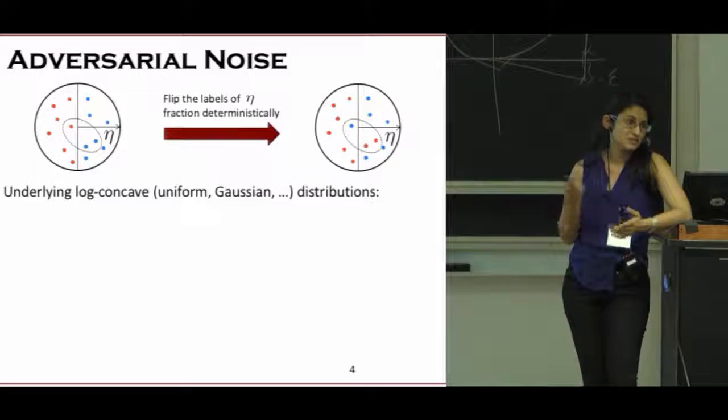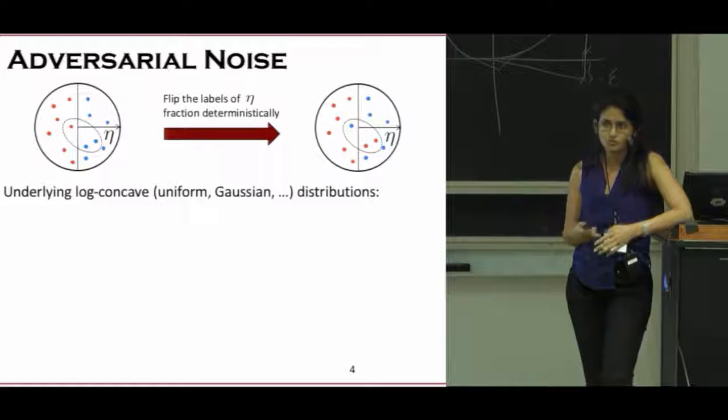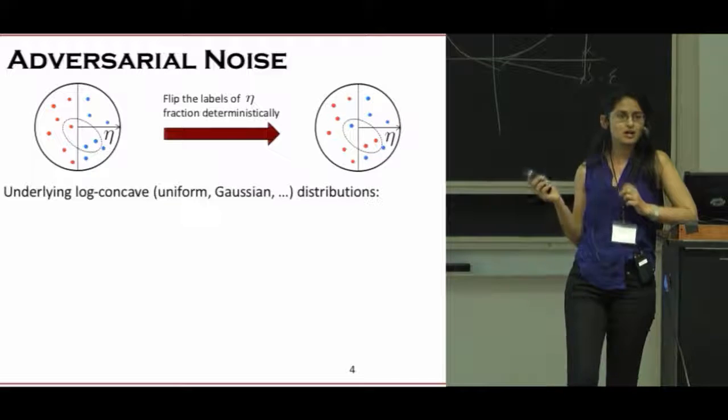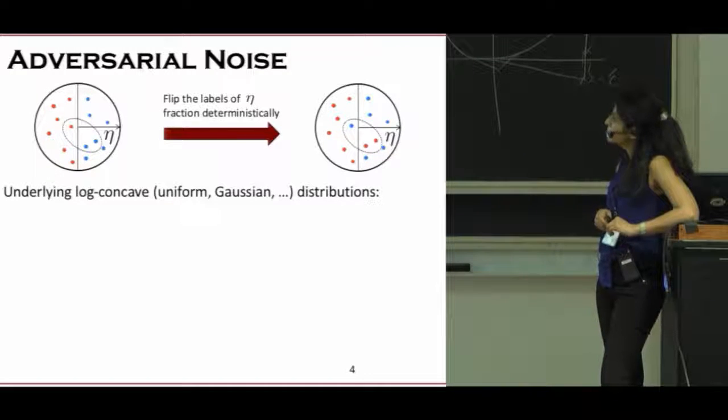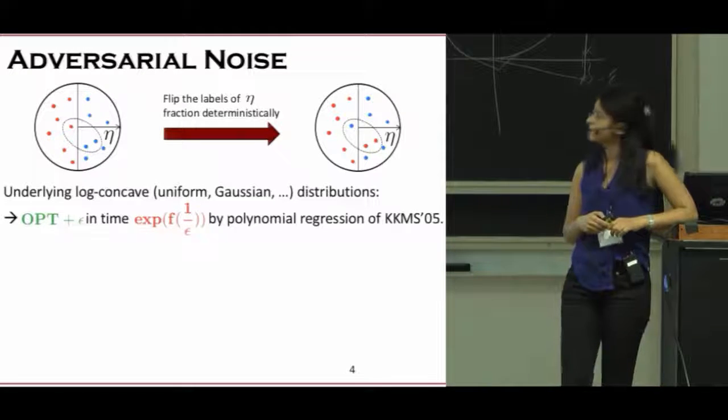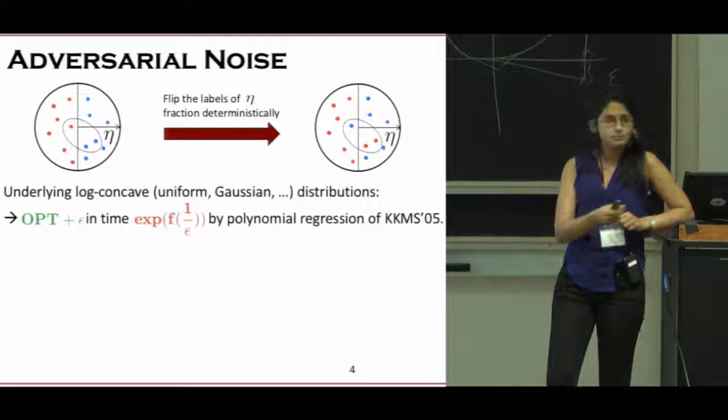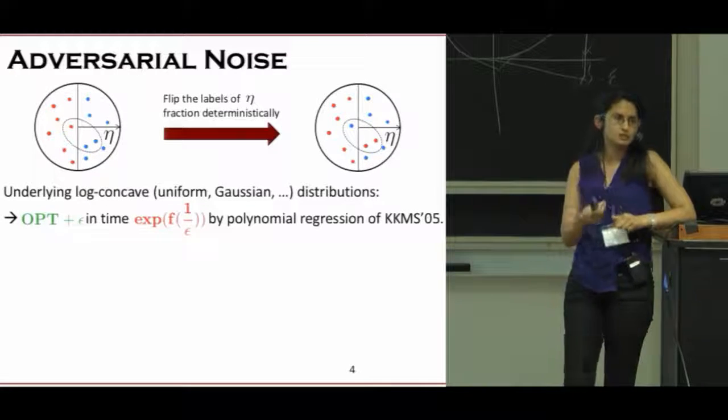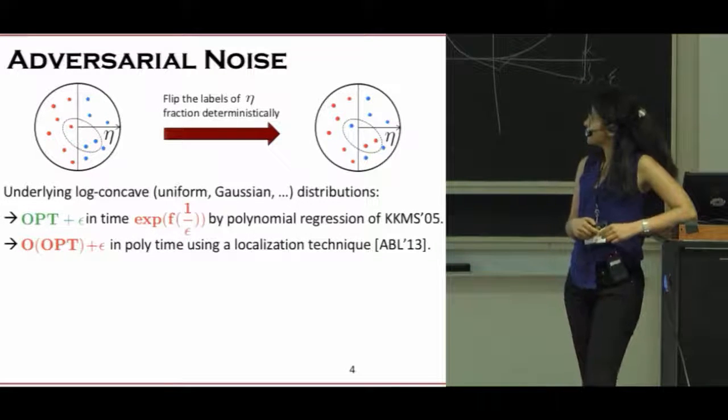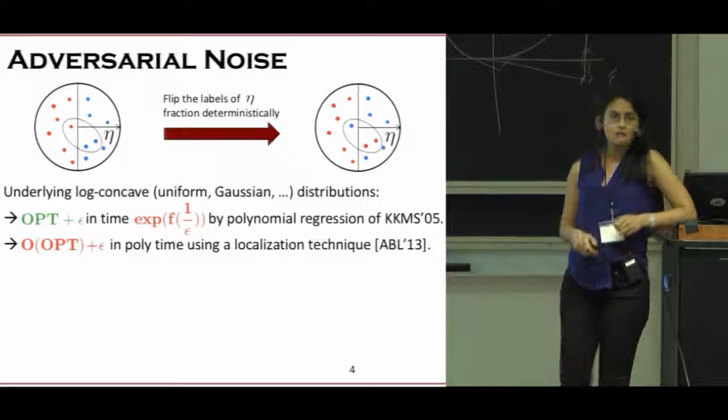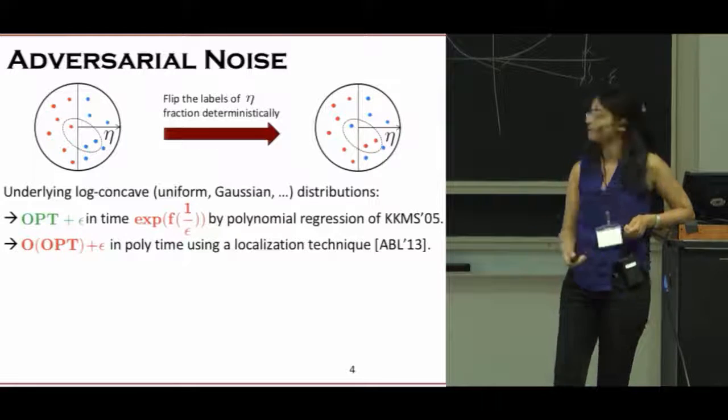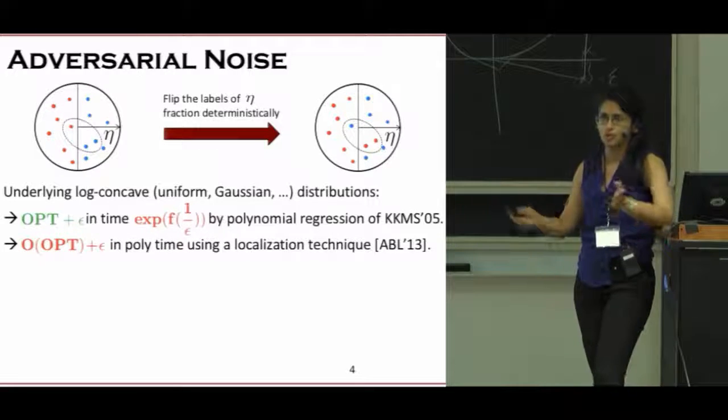This is a very difficult model. Most of the results known in this space are usually negative in terms of computational efficiency, but when you have log-concave distribution or isotropic log-concave distributions, there are a couple of very nice results. For example, the polynomial regression of KKMS shows that you can get arbitrarily close to opt, but the price you have to pay both in sample and runtime is exponential in one over epsilon. There's also an algorithm of ABL that shows that if you want to get some constant approximation of opt, you can do that with a truly polynomial time algorithm.